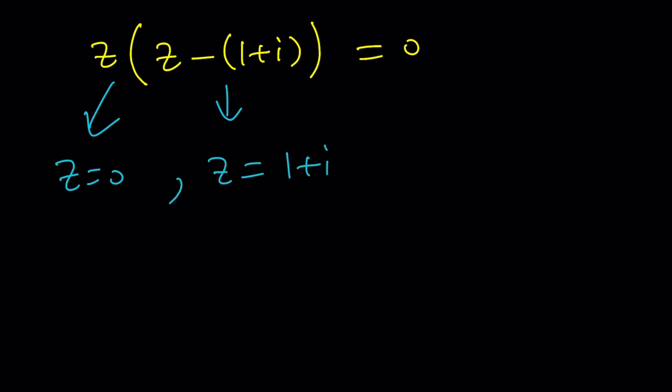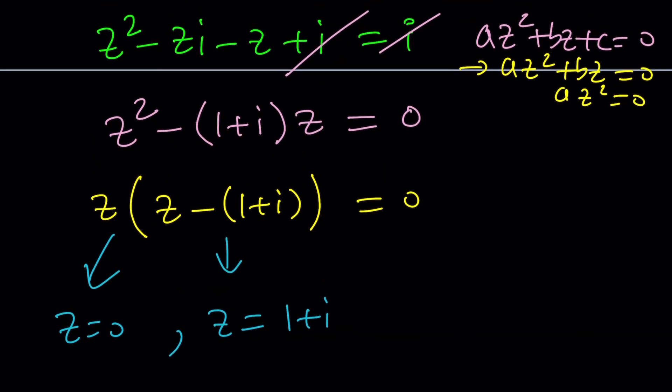You're going to get z equals 0 or z equals 1 plus i. So since this is quadratic, there should be two complex solutions, right? And with multiplicities, of course, sometimes you'll have a double root, but that still counts because of the multiplicity. Cool. So that's one way to approach it.